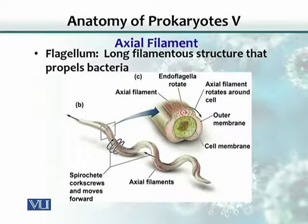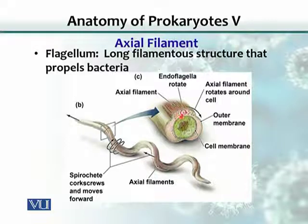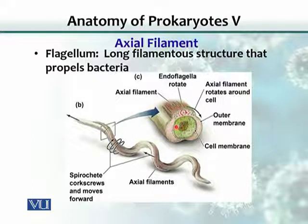The axial filament consists of a number of endoflagella. These are small filaments that are grouped together and named as axial filaments. The key difference between the flagellum and the axial filament is that the axial filament is enclosed in an outer sheath. There are basically two cell membranes: an inner cell membrane and an outer cell membrane, and the axial filaments are embedded in the space between these two membranes.